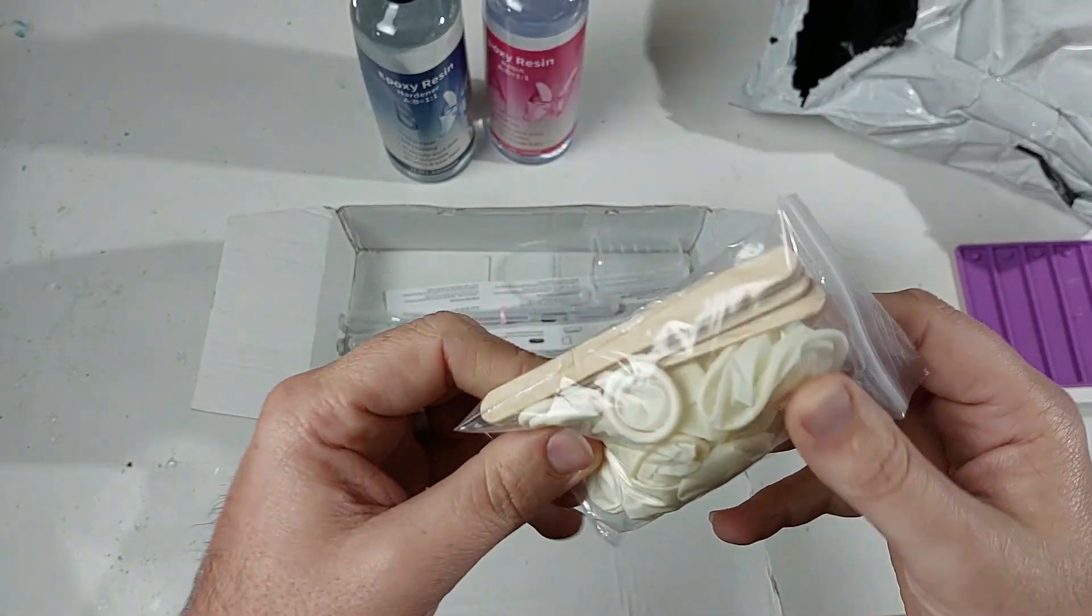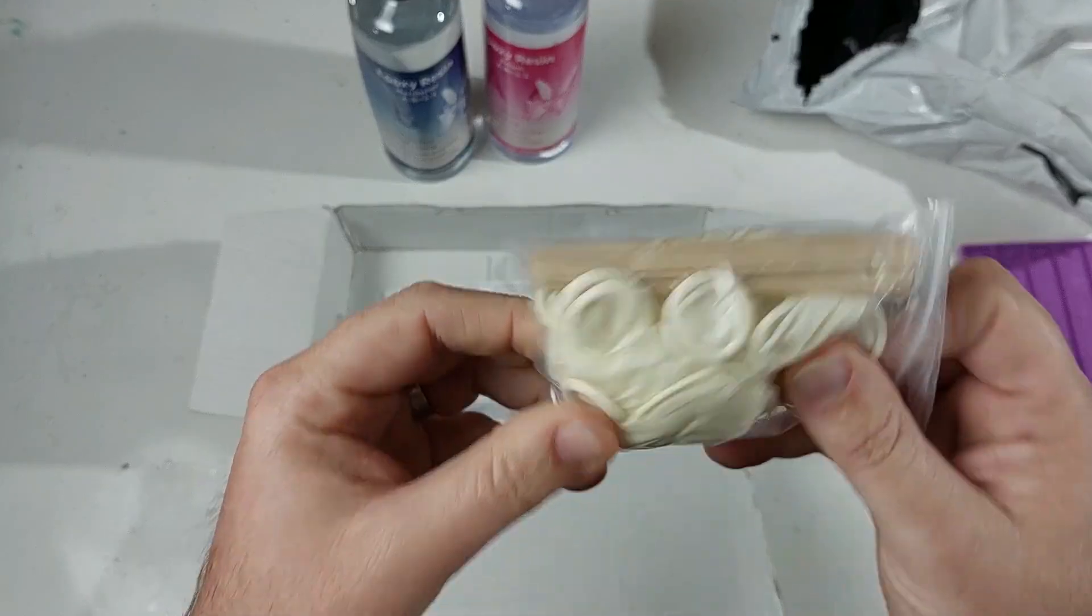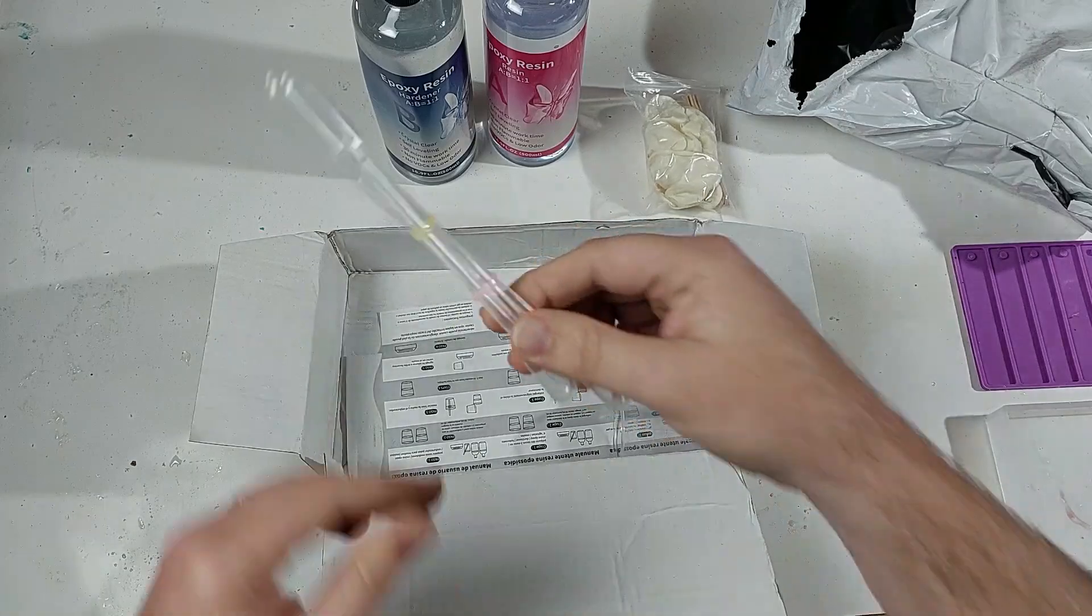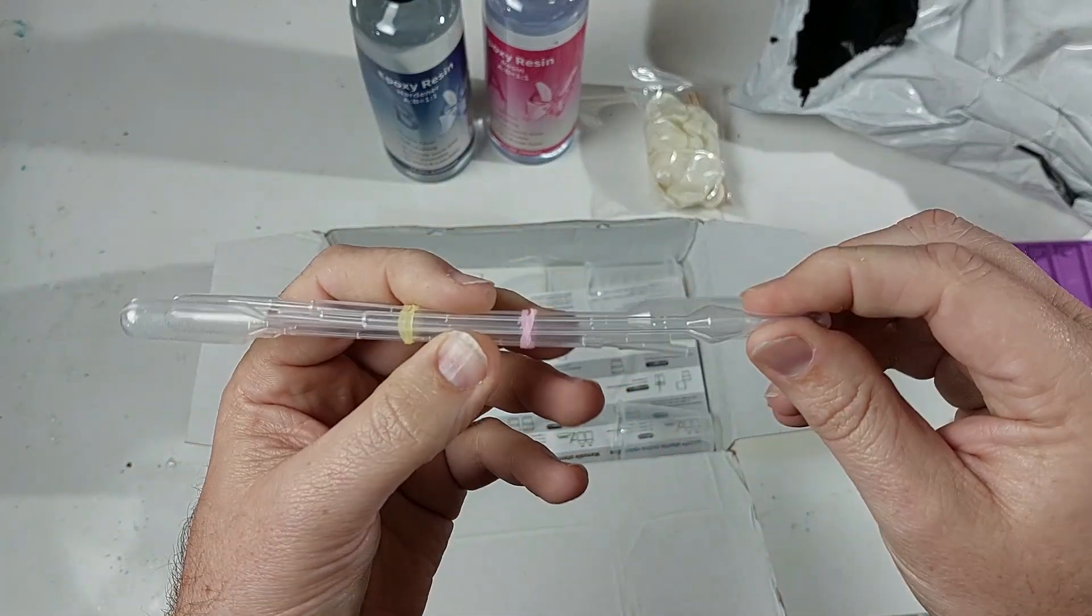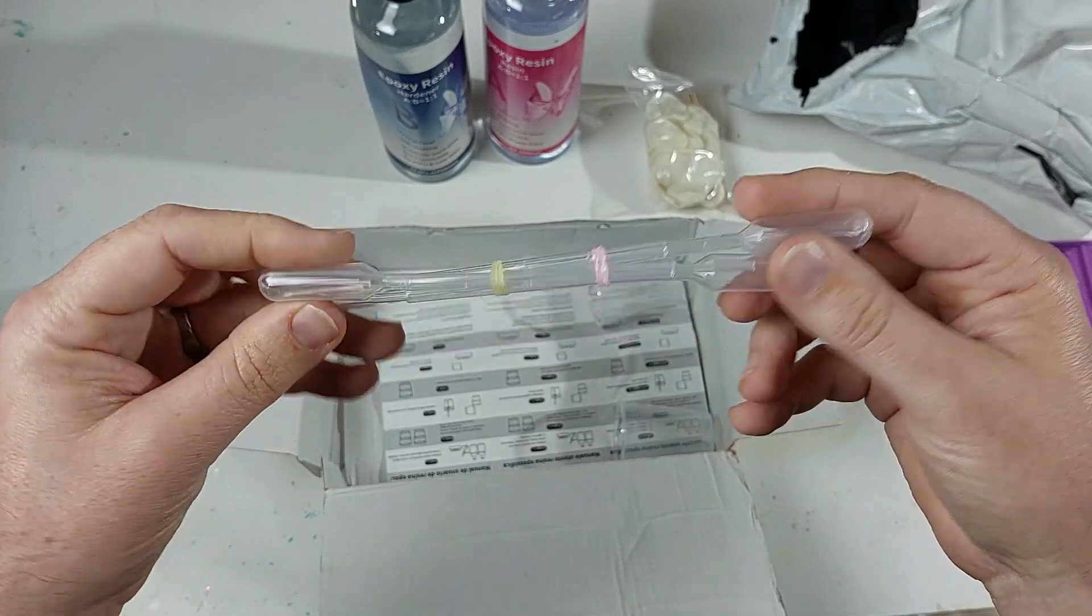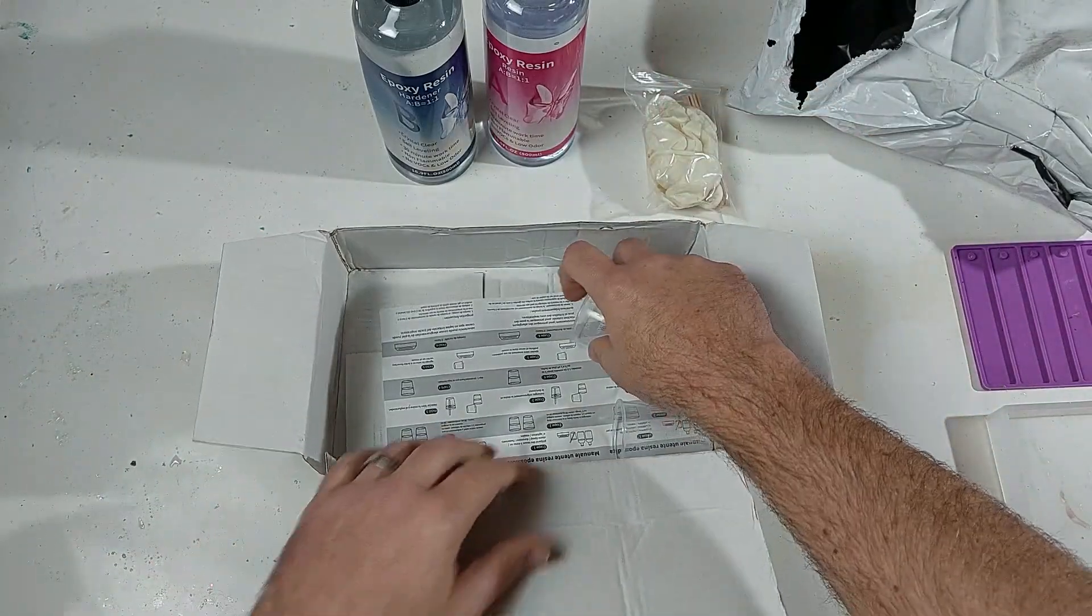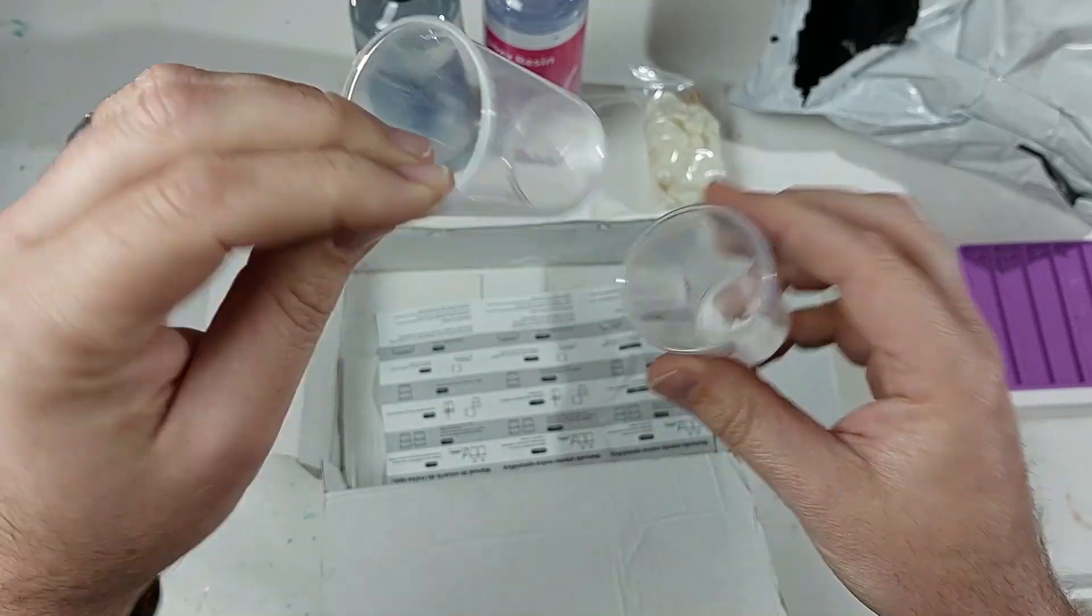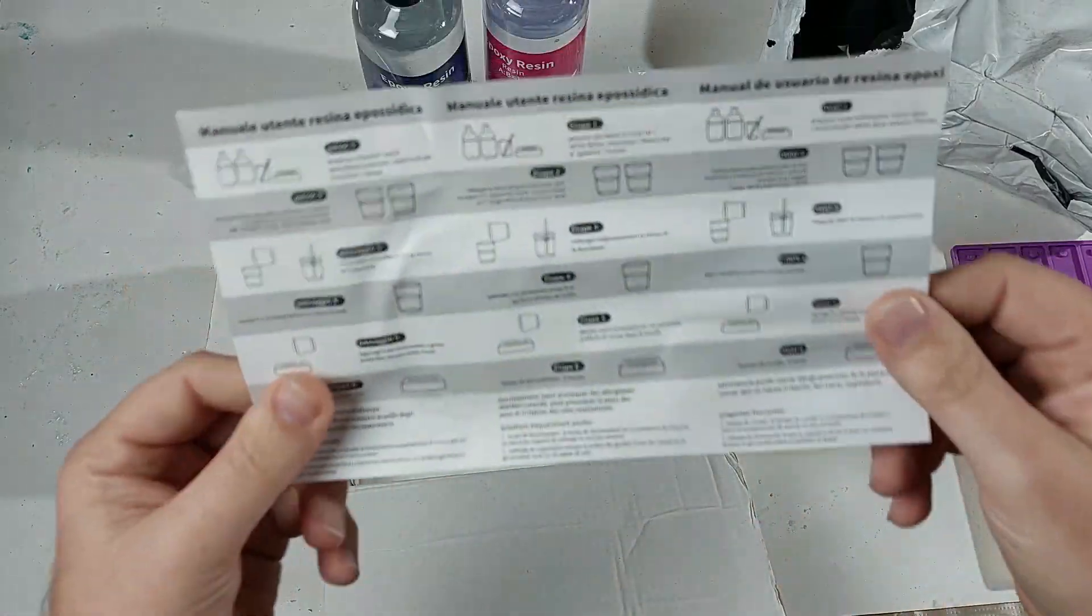We get some little finger gloves by the looks of things, some stirring sticks, as well as the kit comes with a couple of these sort of sucker things and a couple of small little measuring cups and some instructions.